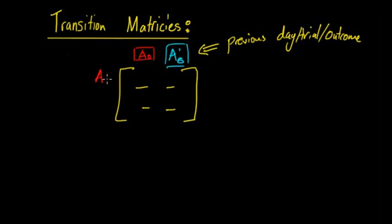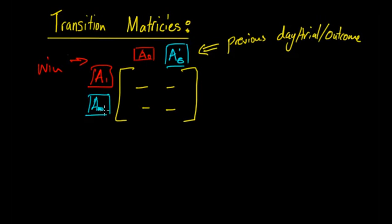Along the rows we have the outcome we care about - the win from the outcome we're looking at, or the loss. So A dash is the loss or failure, and A is the success. This is very abstract, but with an example it becomes a lot clearer.